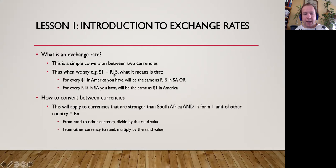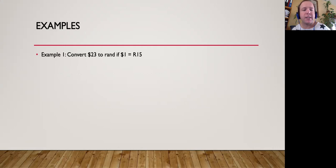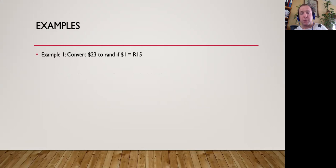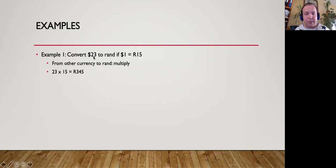Let's take an example. Convert $23 into rand, if $1 is equal to 15. Notice we're going from dollars to rand — the dollar is stronger than us, and we're converting to rand, which means we need to multiply. So $23 times 15 gives me 345 rand.